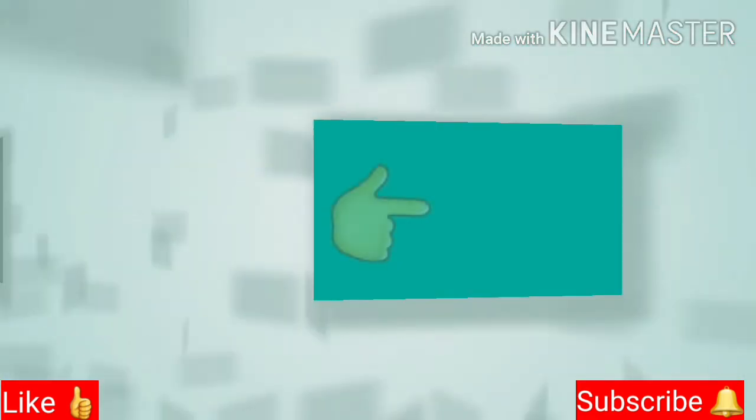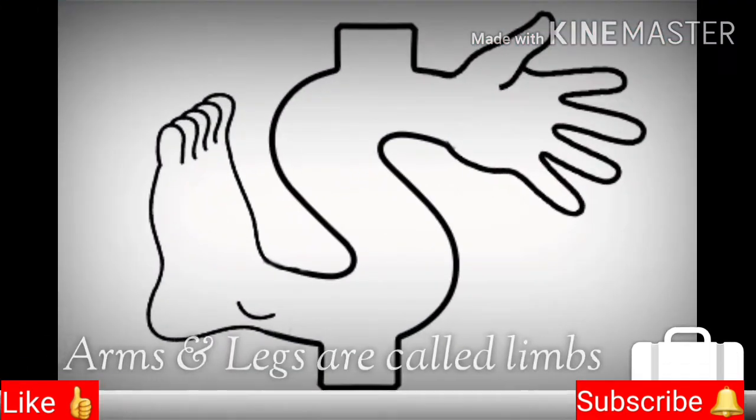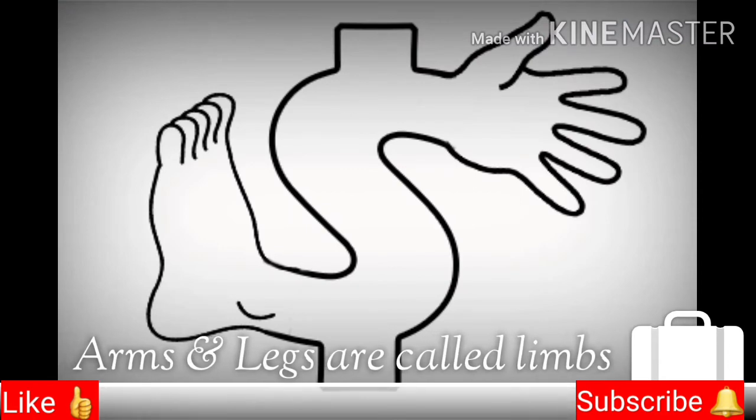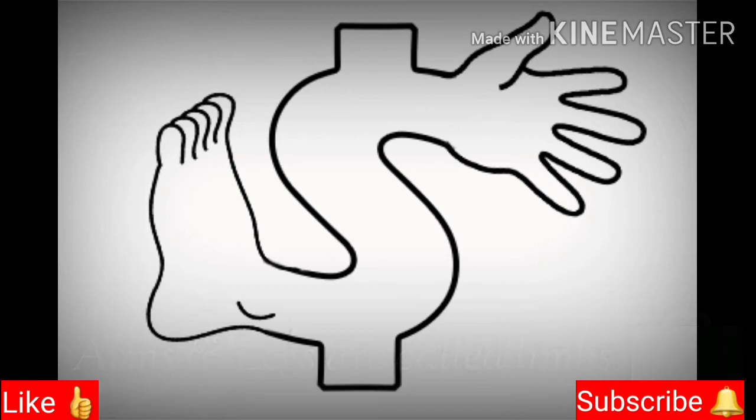Let's move to the last point. Limbs. The arms are called the upper limbs and the legs are called the lower limbs.